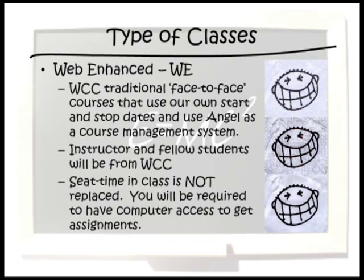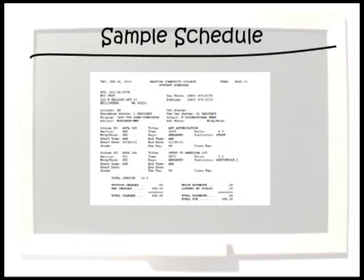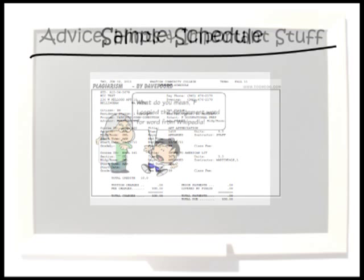Any class that uses the internet will be labeled with WE for Web Enhanced. Seat time in class is not replaced, and you should expect to use the internet for turning in assignments, research, or other basic functions. Your printed schedule will use these various codes to show what type of online class you have.